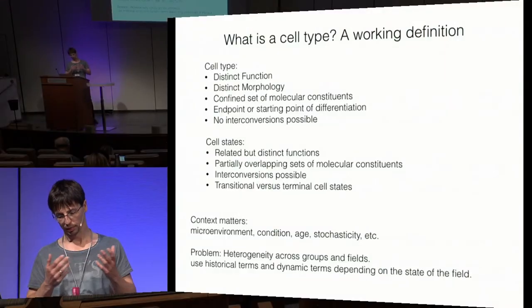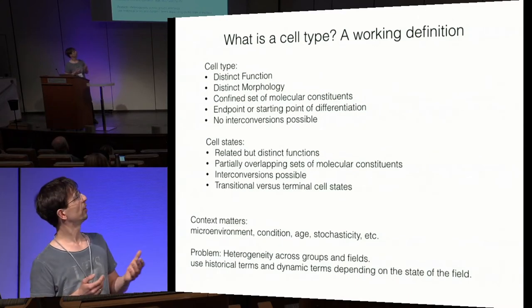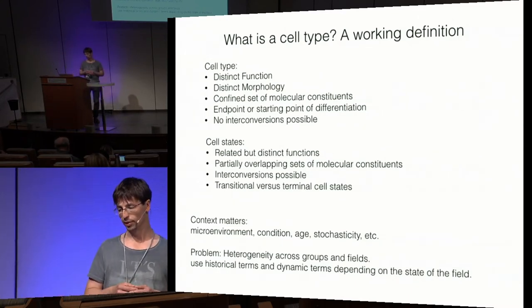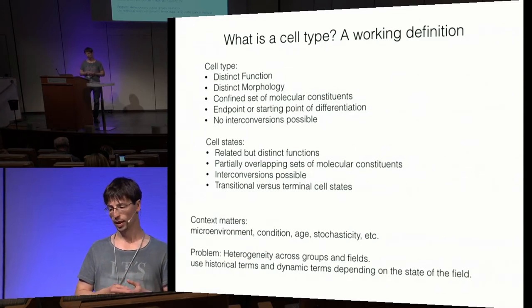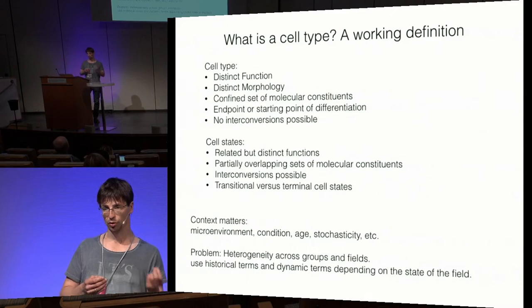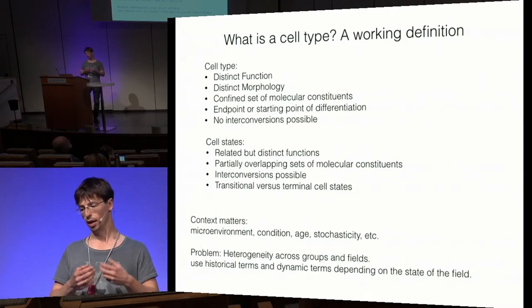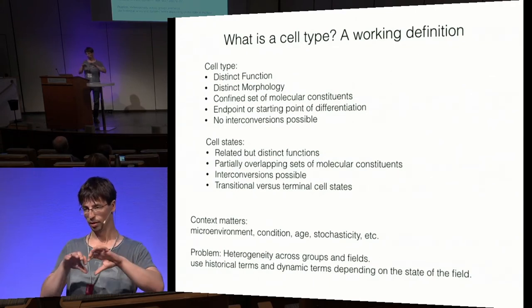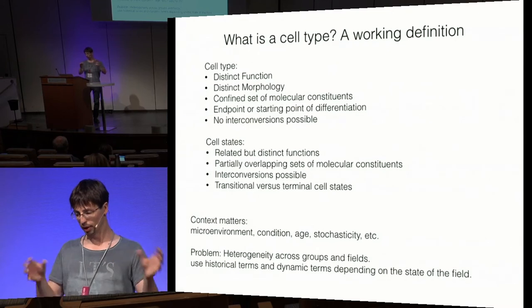Cell types can be thought of as endpoints or starting points of differentiation. Cell states, by contrast, are more dynamic entities where conversions between states are possible, but not so between cell types. Cell types should also be temporally separated.